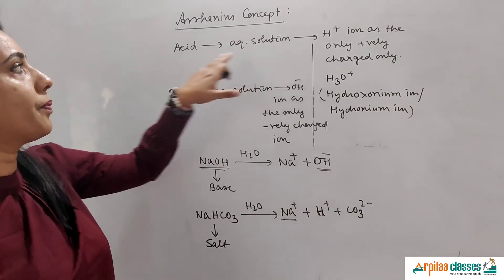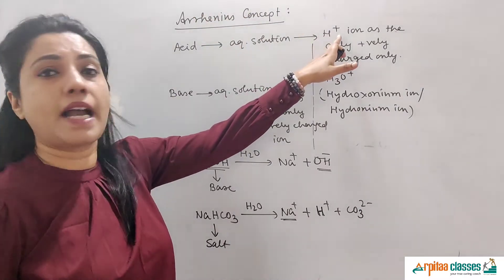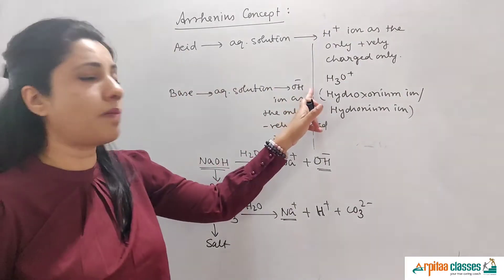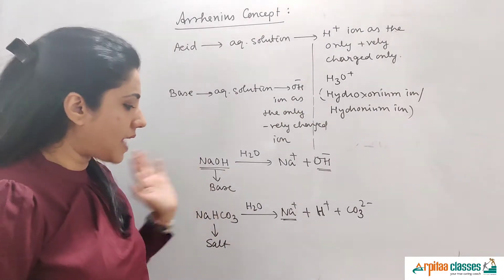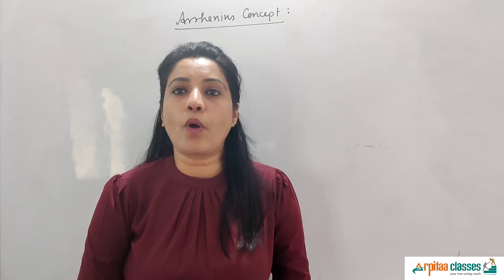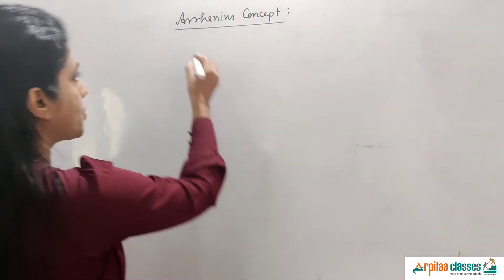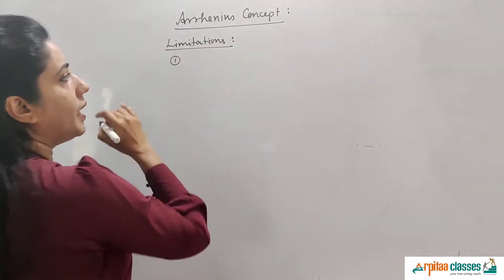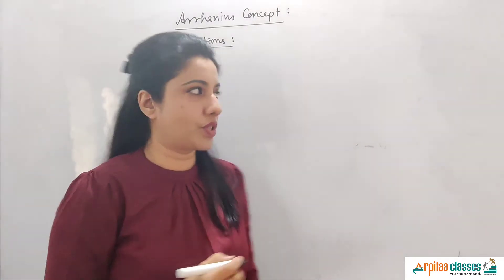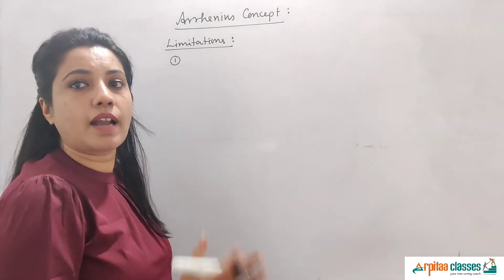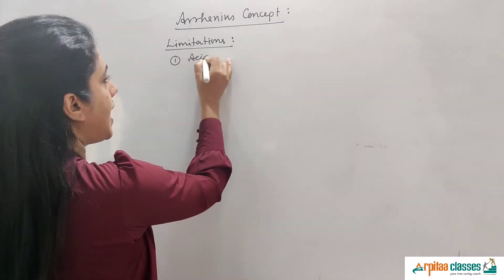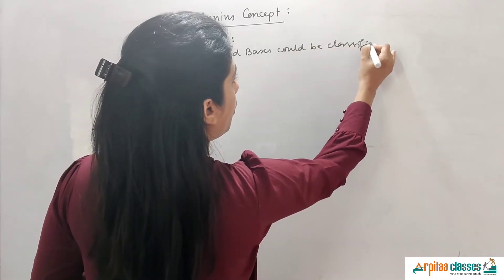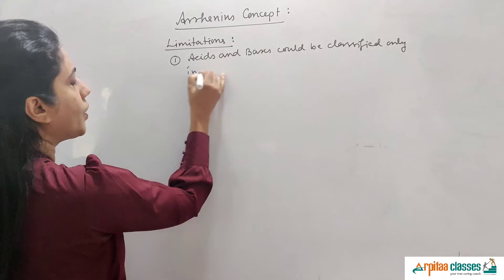It is very important: when a substance dissolved in aqueous solution gives only H⁺ ion as the positively charged ion (or H3O⁺), it is an acid. When a substance dissolved in water gives only OH⁻ ion as the negatively charged ion, it is called a base. This is the Arrhenius concept of acids and bases. Now, the limitations of this concept: acids and bases are categorized only in aqueous solution — without aqueous solution, Arrhenius could not classify them.